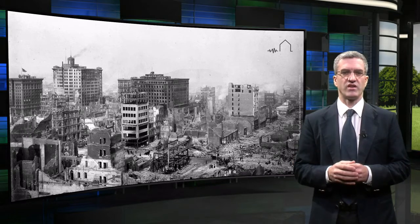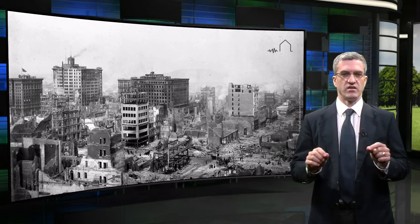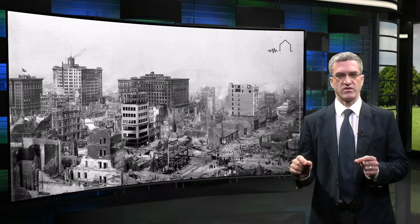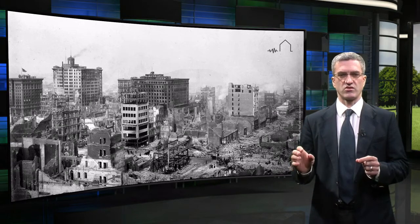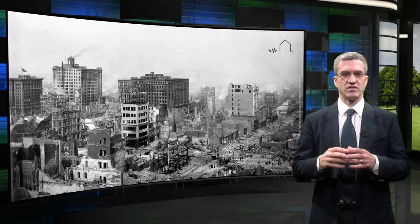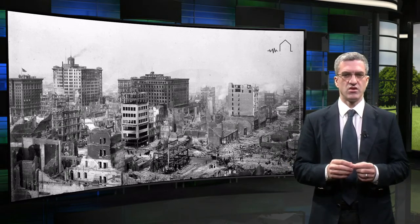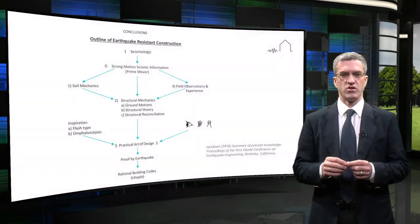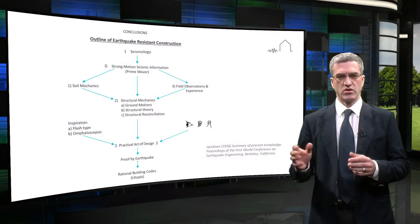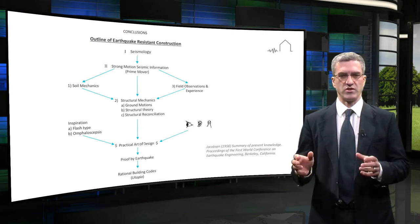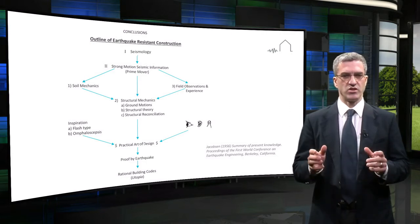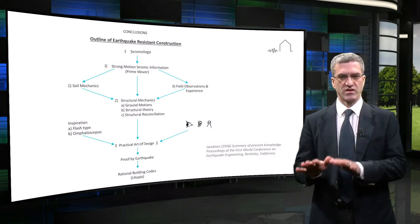Progress accelerated with the advent of digital computing in the 1960s and 1970s, which enabled for the first time the dynamic characteristics of recorded ground motions and their effect on structural systems to be studied systematically. The precursors of our modern seismic codes emerged in the 1960s, embodying the philosophy that it is generally not economical to construct normal buildings to survive large earthquakes without damage, and whilst incurring damage, buildings should be designed to prevent collapse.